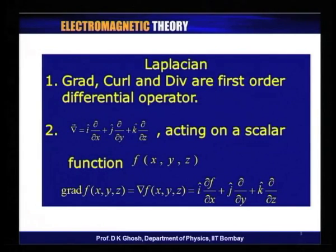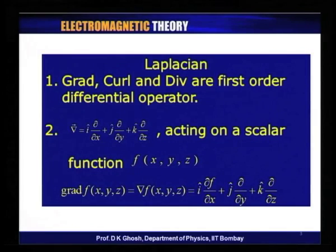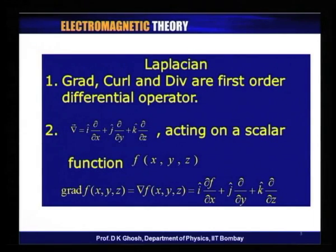For instance, the gradient which is given by i d/dx plus j d/dy plus k d/dz, acts on a scalar function f(x,y,z) and gradient of f is a vector given by unit vector i times the partial derivative of f with respect to x, plus unit vector j times partial f with respect to y, and unit vector k times partial f with respect to z.